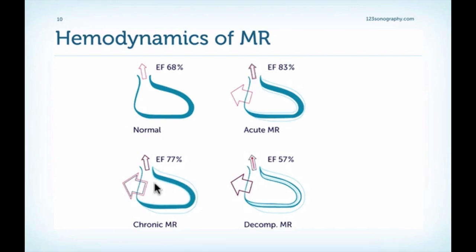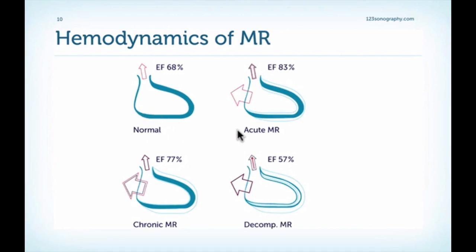Since chronic left ventricular volume overload in the setting of MR is detrimental to the left ventricle, we can eventually see deterioration of left ventricular function. This is what we call decompensated MR. In this situation, we still have significant MR, but the left ventricle is not able to eject enough blood, giving us the combination of a large left ventricle with a reduction in left ventricular function. Heart rate is normal in the acute phase, but tachycardia develops, and in decompensated MR, heart rate becomes significantly elevated.